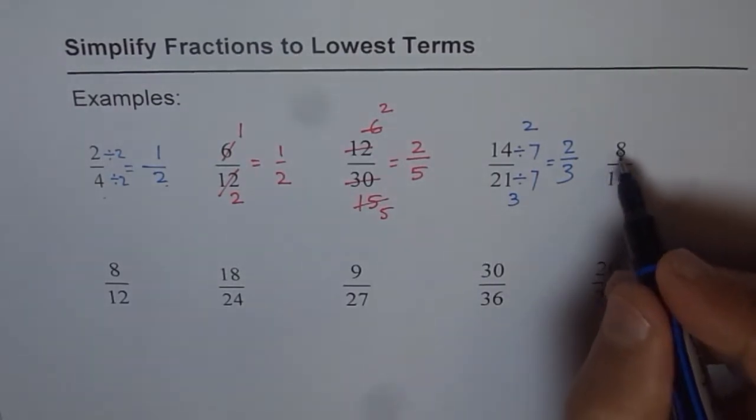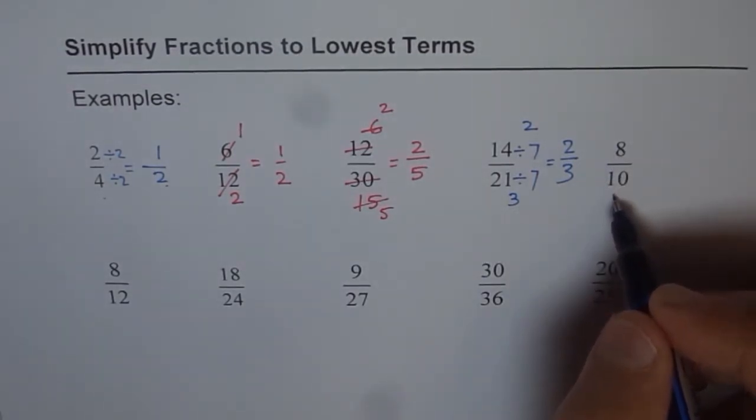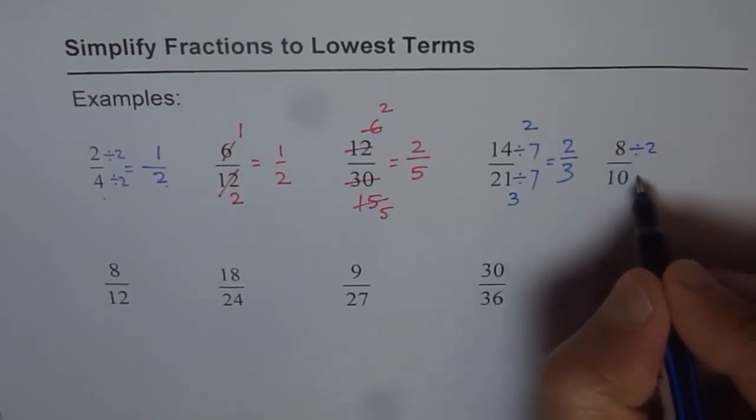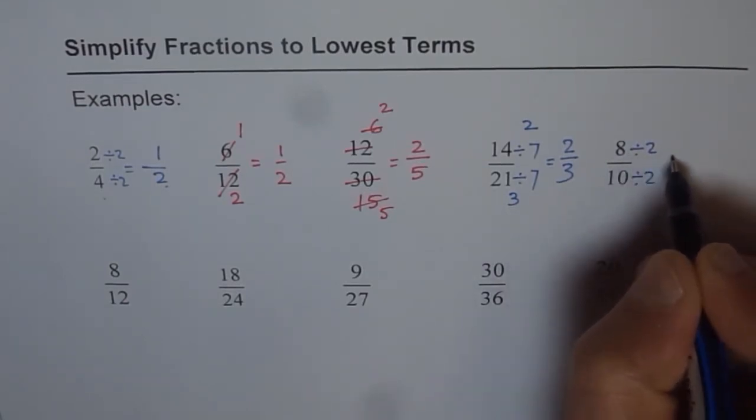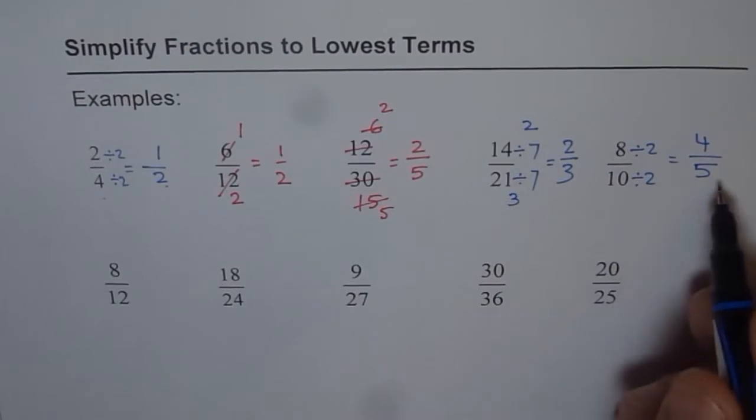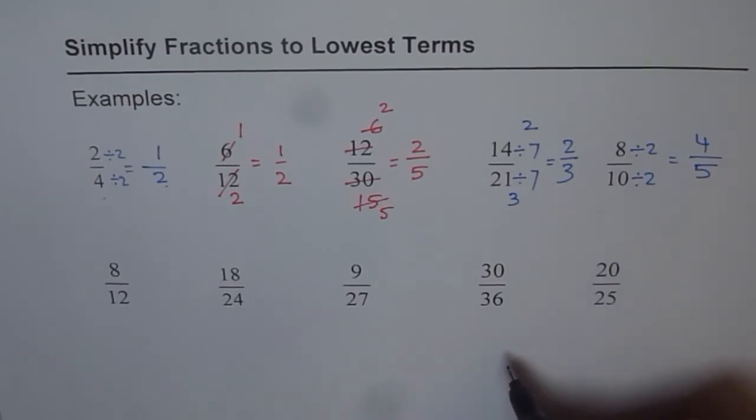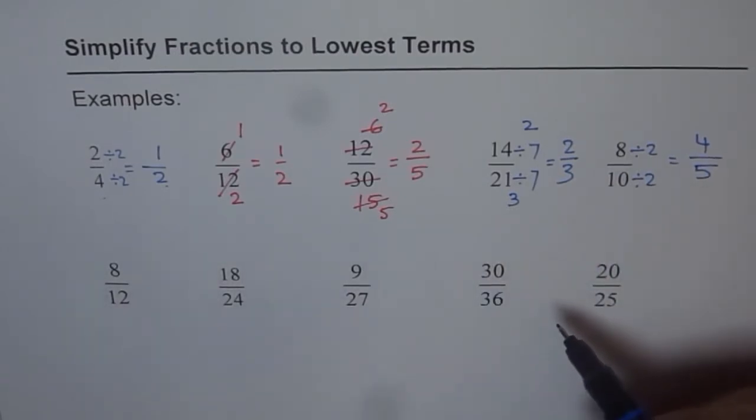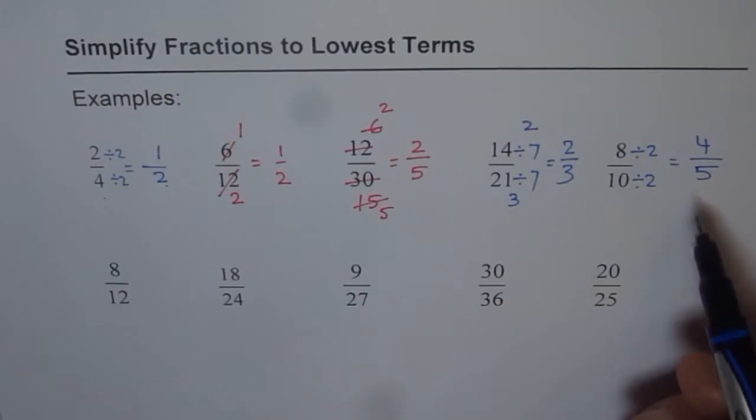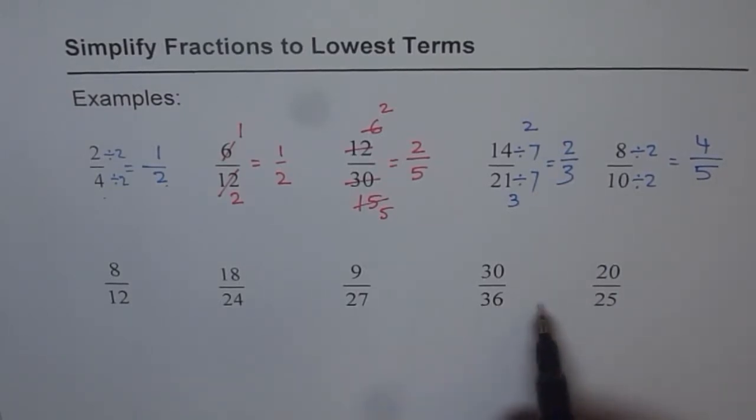Now let's do 8 over 10. You can divide both by 2. So let's divide them by 2. If you divide by 2, you get 8 divided by 2 as 4 and 10 divided by 2 as 5. And you can straight away write your answer. So these are different ways of dividing and simplifying and writing the fractions in the lowest terms. I hope you got the concept. And at this stage, all of you can pause and do these questions on your own.